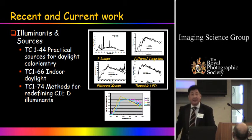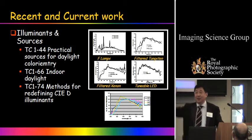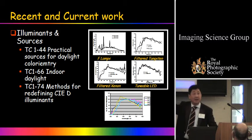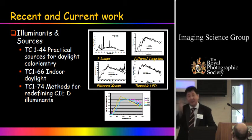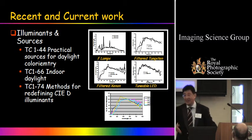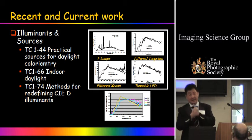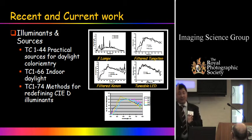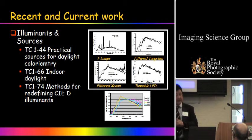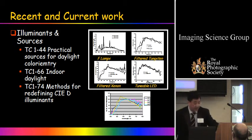The new recommendation is on indoor daylight. CIE has D65 and D50, but D65 was mostly defined for outdoor conditions. Once we look at real samples in a room, we're talking about light coming through a window — partially filtered. TC1-66 is proposing an indoor daylight standard, which will have less UV content, a partial cutoff of the filters. There's also work on methods for redefining CIE D luminants.